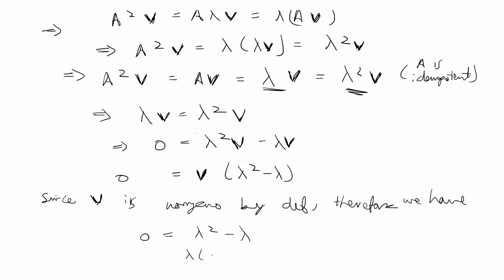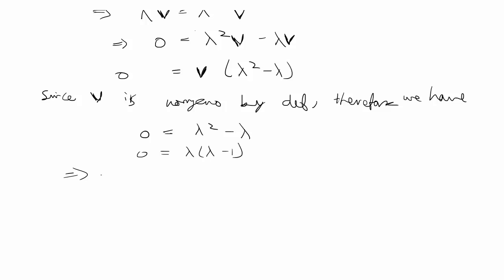If we pull out a lambda, we get lambda times lambda minus one equal to zero. Finally with this last line, we're able to conclude that either the eigenvalue is zero or the eigenvalue is one.